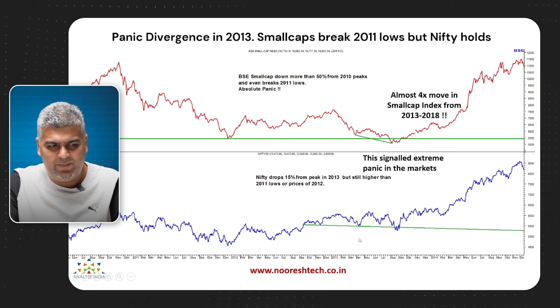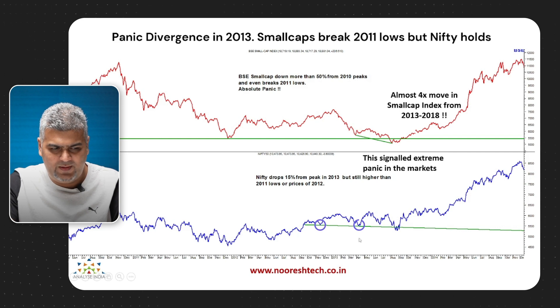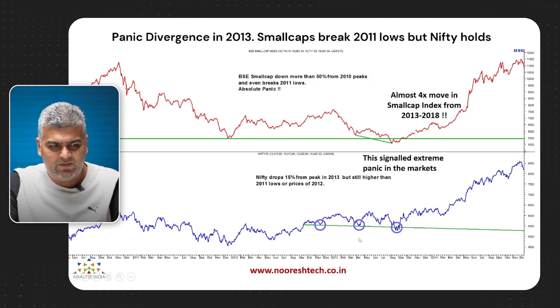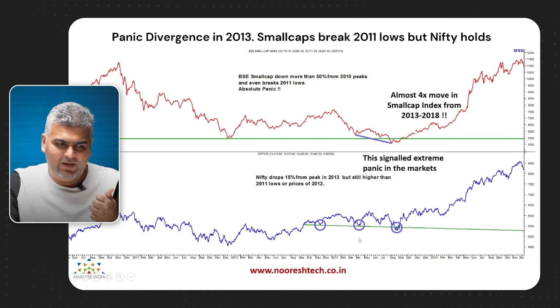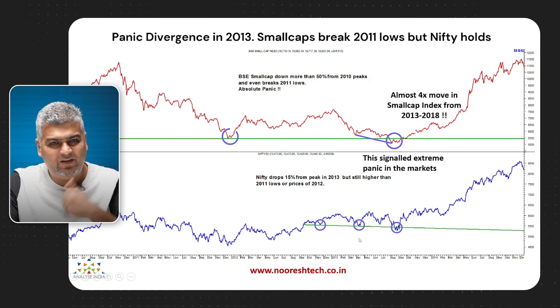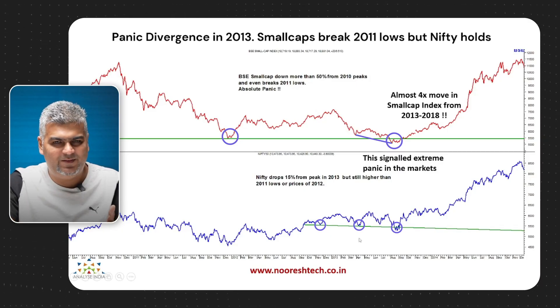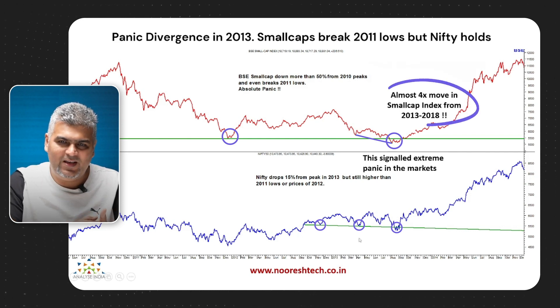A very similar thing happened in 2012-2013. Over almost 6-8 months, the Nifty had the same bottoms. The bottom in August 2013 was only marginally lower, but the BSE small cap index took a sharp downtick — it broke below the 2011 lows while the Nifty was actually up from 4500 to 5100, roughly 15% higher. That was the point of extreme pessimism, very similar to the extreme optimism of 2007. Between 2013 and 2018, the small cap index went on to deliver a 3x to 4x move with some of the best opportunities in that period.